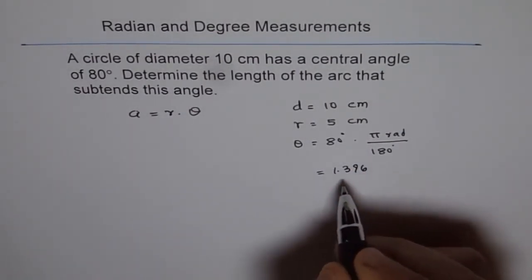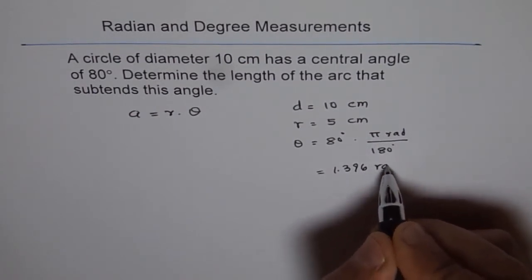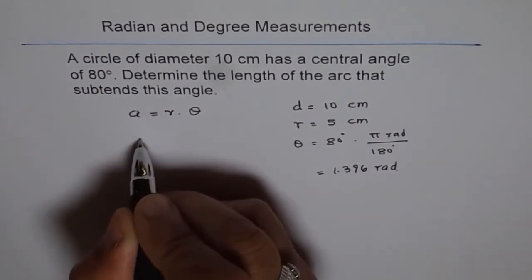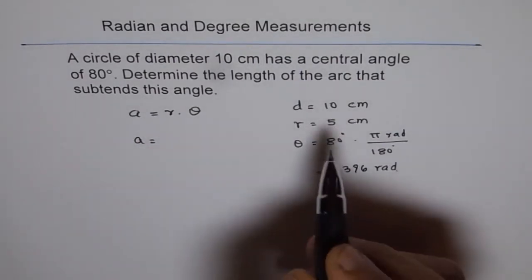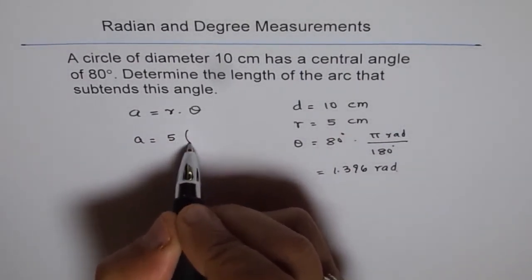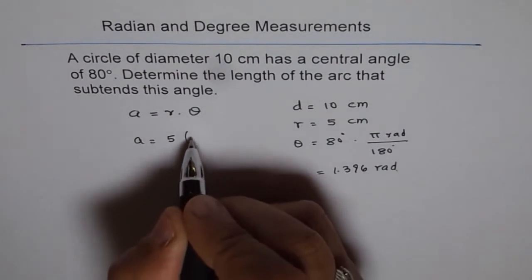So that is in radians. Therefore, arc length equals radius times theta, which is 5 times 1.396.